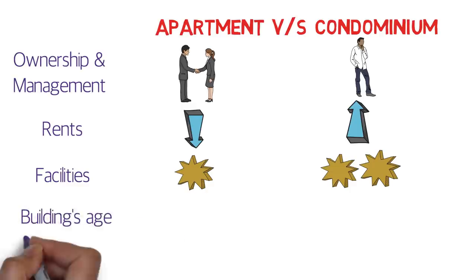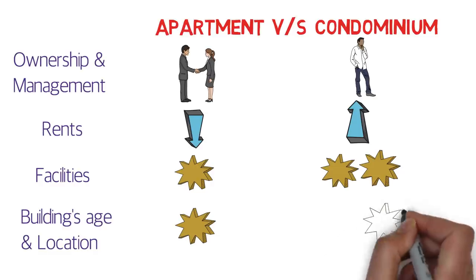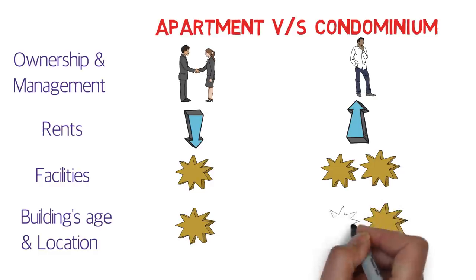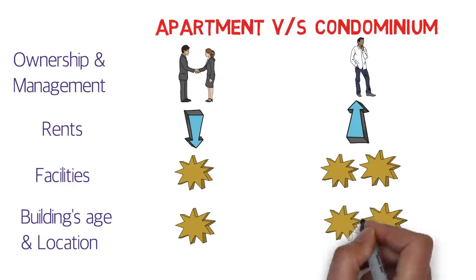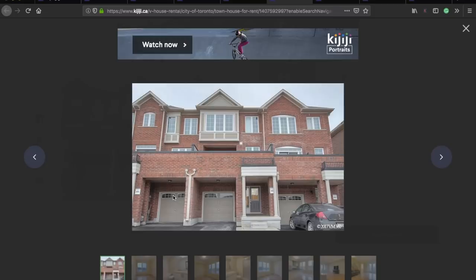Another difference is building age and location. Apartments tend to be on the older side, while condominiums represent the latest trends — newer buildings are more likely to have condos than apartments. In terms of location, apartments are often farther from metro stations, while condominiums in Toronto are generally closer to metro stations. So for a higher price, you get better facilities and a better location. These are the basic differences between an apartment and a condominium.